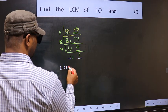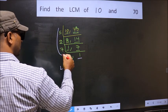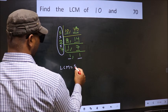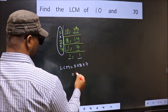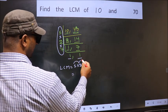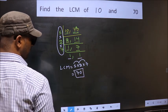So our LCM is the product of these numbers that is 5 into 2 into 7. So let us multiply these numbers. 5 into 2, 10 into 7, 70. So 70 is our LCM.